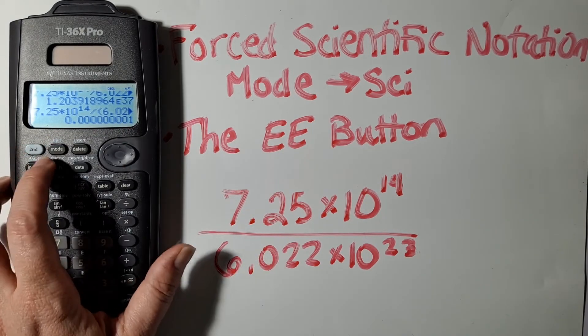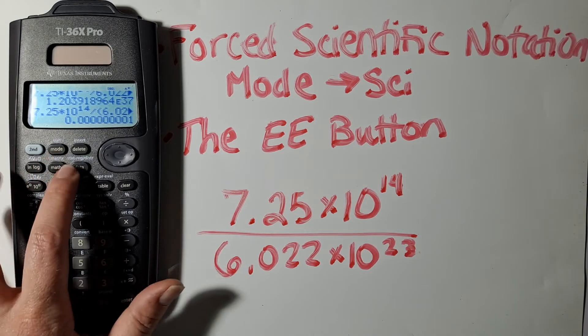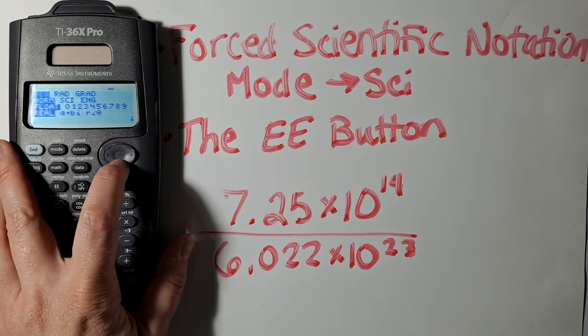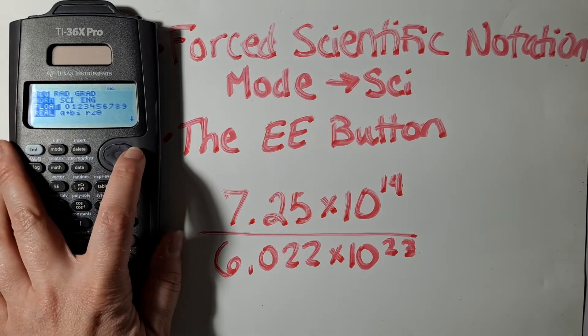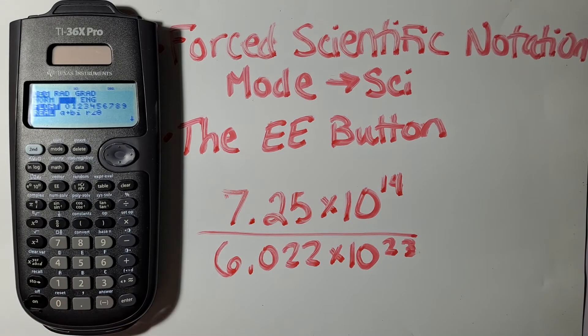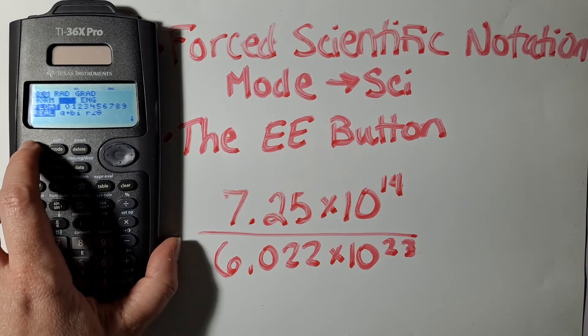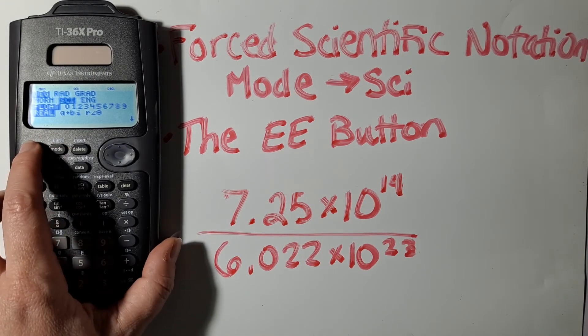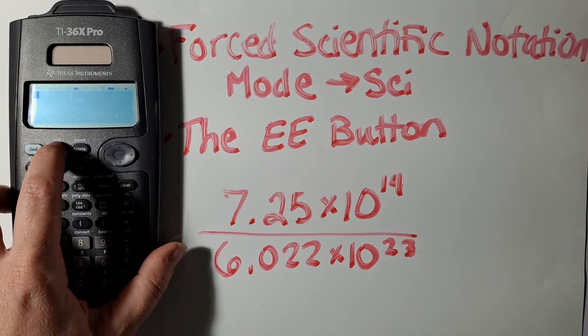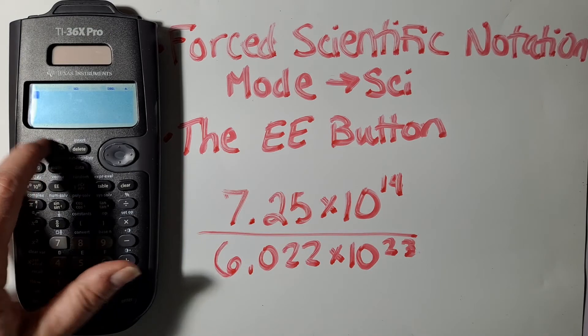So I'm going to force my calculator into scientific notation mode by hitting mode first, then going down to the second row using the navigation key, scrolling over to where it says Sci, hit enter, and that will put my calculator in scientific notation mode. Then I hit second, and then mode again, that quits it. You see that it says quit above the mode button.